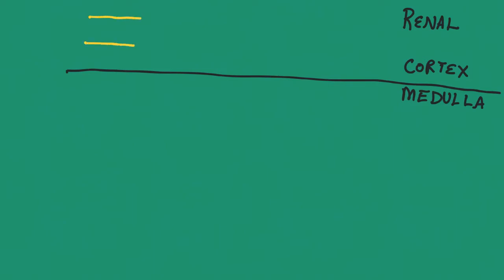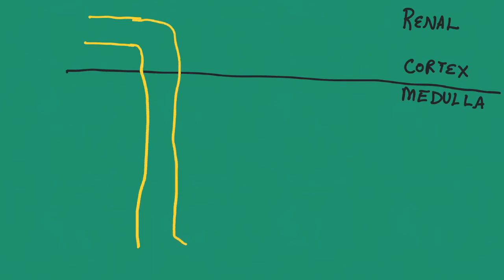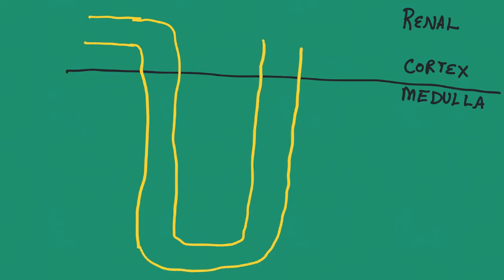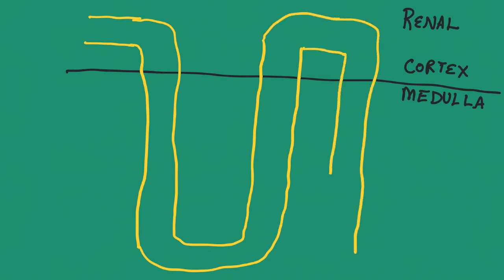Here is the PCT going down as the descending limb of the nephron loop, the nephron loop, and the ascending limb of the nephron loop. Here's the DCT and coming down is the collecting duct.